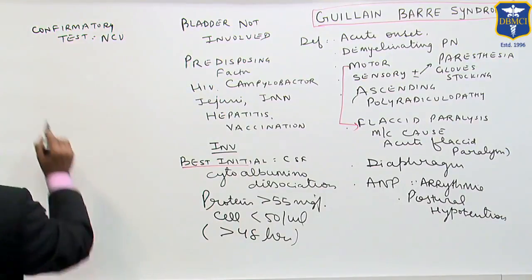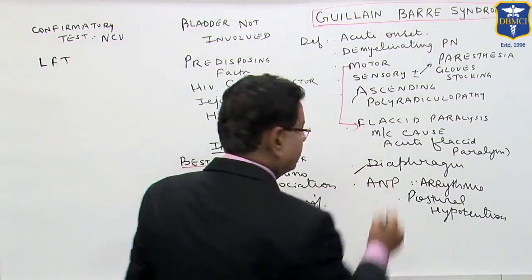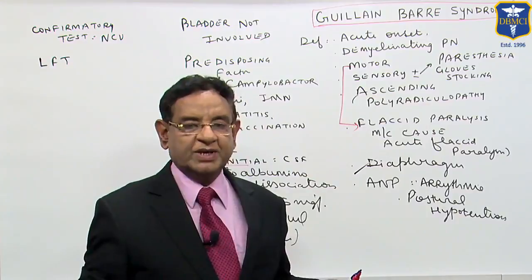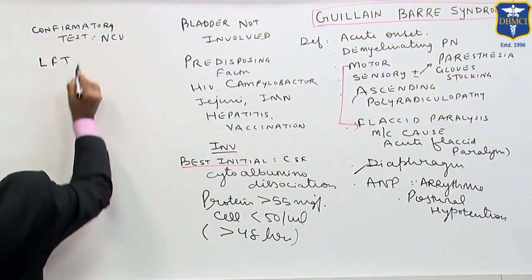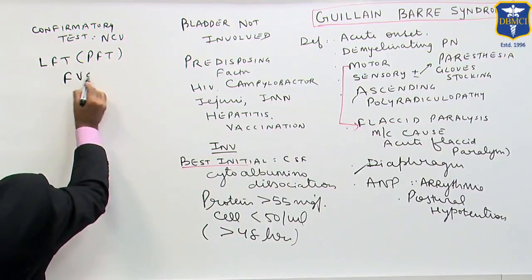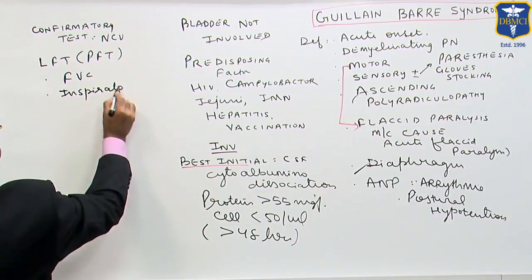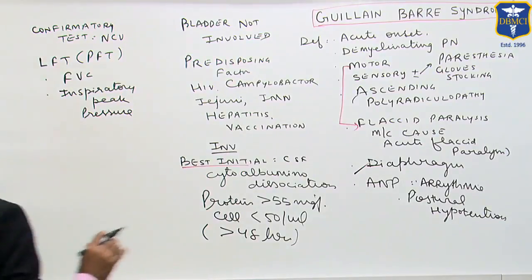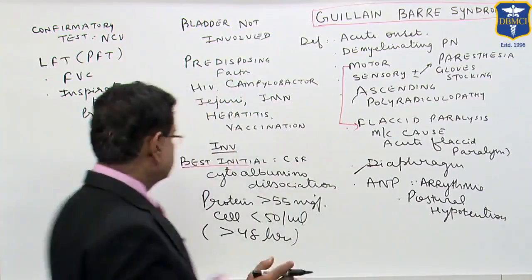We also have to be very watchful about the lung function test. If the diaphragm is involved, that leads to immediate mortality. That is why these patients should always be managed in the intensive care unit where we have the facility of ventilation. To assess pulmonary function, we measure forced vital capacity and inspiratory peak pressure, because the diaphragm is involved in inspiration.